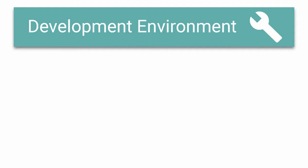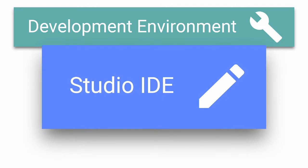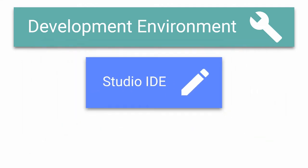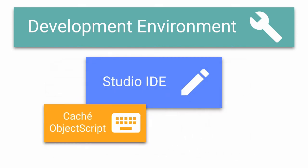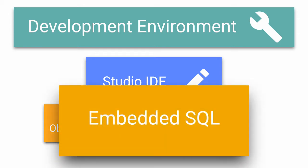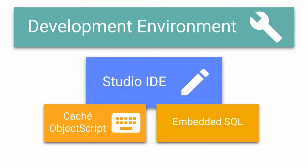As a development environment, Cache also provides many capabilities that assist you in building applications. Studio is the integrated development environment for writing code. Cache ObjectScript, the default programming language used in Cache, provides native access to all supported models. ObjectScript also hosts embedded SQL similar to the procedural languages of other relational databases.